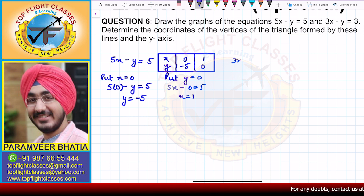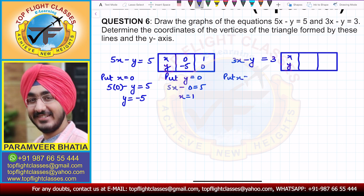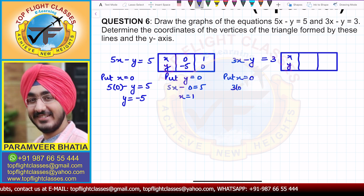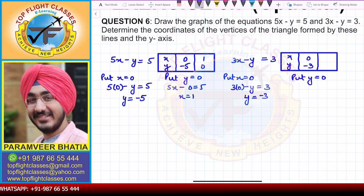The next equation we have is 3x minus y equal to 3. Again I'll draw a table with x and y. Putting x equal to 0: 3 into 0 minus y equals 3, so y is equal to minus 3. When x is 0, y is minus 3. Then putting y equal to 0: 3x minus 0 equals 3, so x is equal to 1. When y is 0, x is 1.